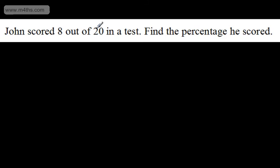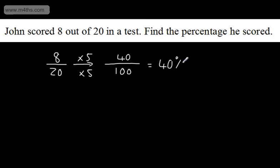OK, John scored 8 out of 20 in a test. Find the percentage he scored. So we've got 8 out of 20. This is what it'd look like in our books. What do I need to do now to get a denominator of 100? The answer is multiply the 20 by 5. So I need to multiply the 8 by 5. That's going to give me 40 out of 100, which is 40%. So we've now found one quantity as a percentage of another. We've looked at 8 as a percentage of 20.